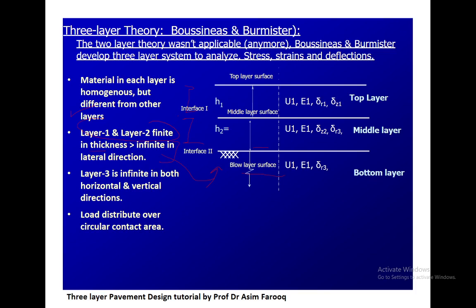Layer one and layer two are finite in thickness — their depth is already determined — but the lower layer, the bottom layer, is basically infinite. All three layers are also infinite in the lateral direction, meaning in the x-axis. H1 is basically the thickness of the top layer while H2 is the thickness of the second layer. The interface is exactly the middle portion between layer one and layer two, and interface two is above the subgrade.